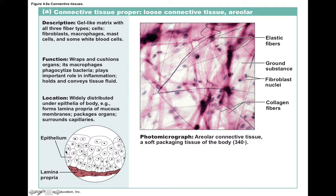it makes sense how areolar connective tissue can nourish other tissues like epithelial tissues, which are avascular — epithelial tissues don't have their own blood vessels and need to be supported and nourished by an underlying connective tissue. This slide shows lamina propria, which is an example of loose areolar connective tissue found in the walls of many internal organs. Nutrients dissolve in the ground substance and diffuse up into the epithelium to supply those cells.